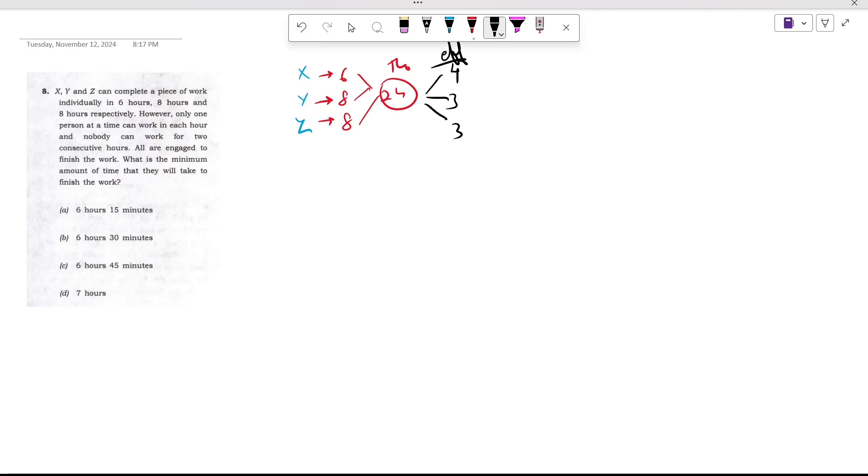Now it's given that only one person can work in each hour, and nobody can work for two consecutive hours. All are engaged to finish the work. What is the minimum time amount of work? We want to find the minimum time.